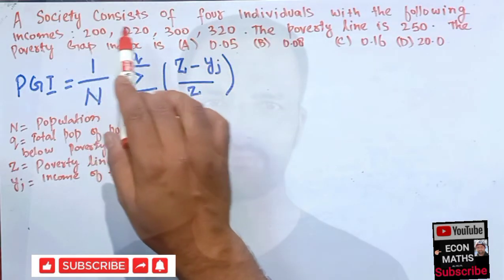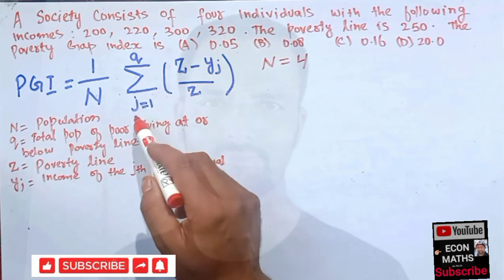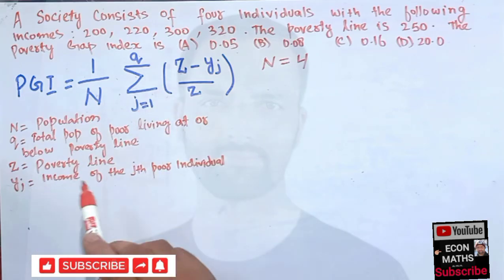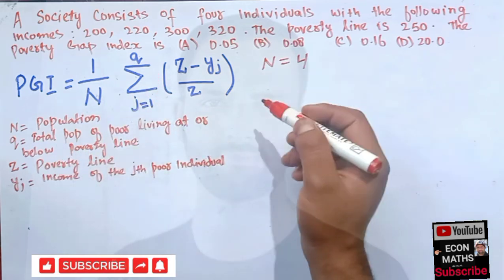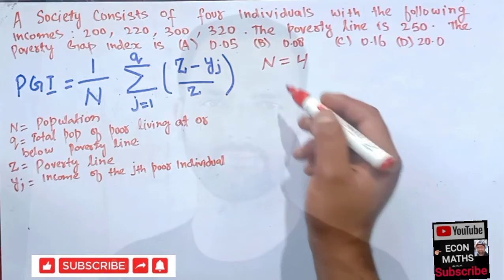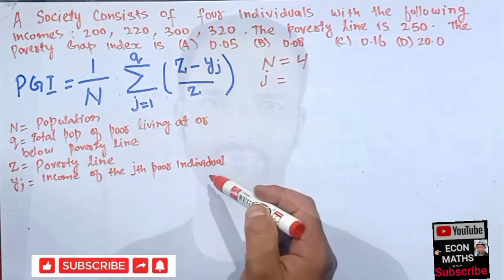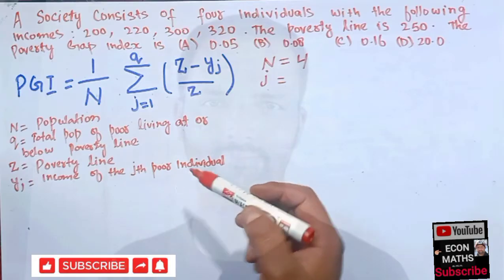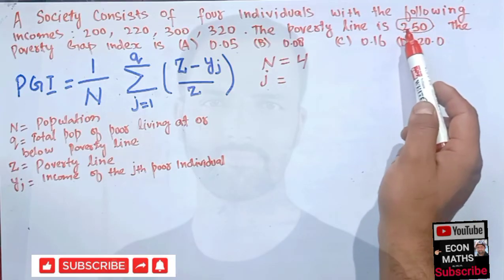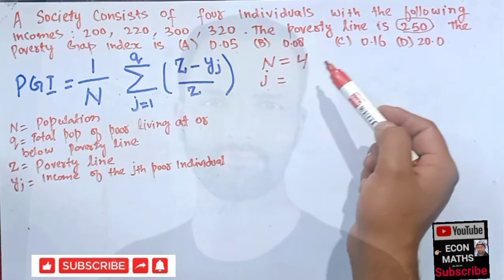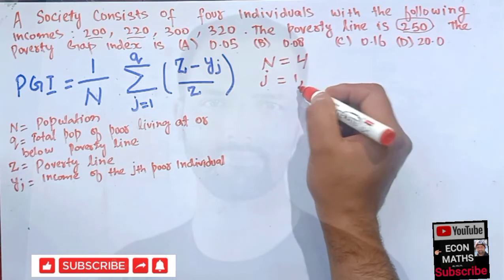Now let's assign the variables their values. The total number of people is four, so n equals 4. Since the poverty line is 250, any income equal to or below 250 counts as poor. That means j equals 1 and 2, corresponding to incomes 200 and 220.